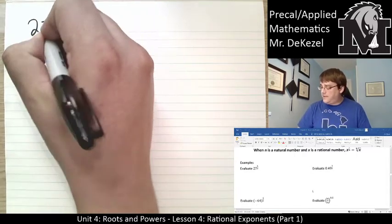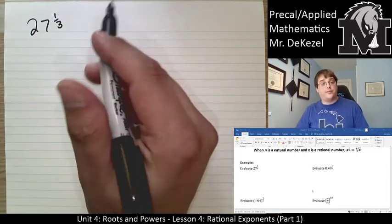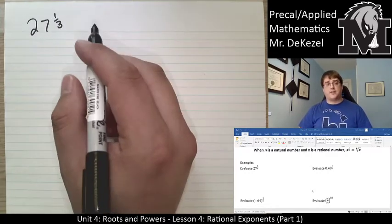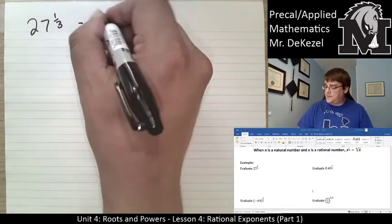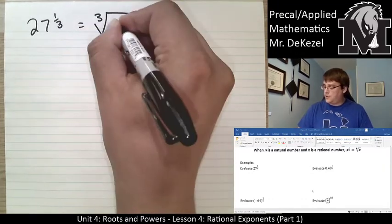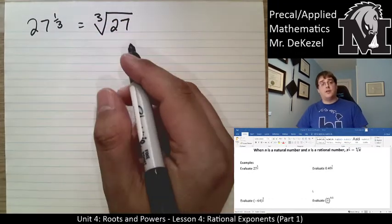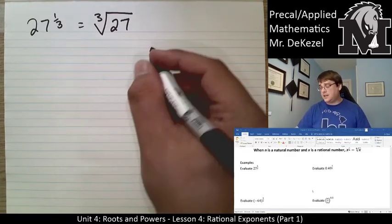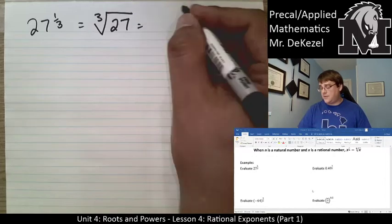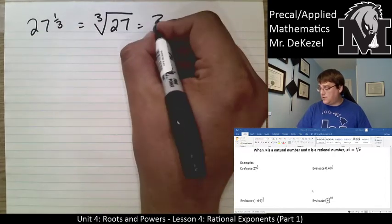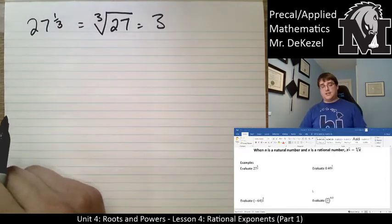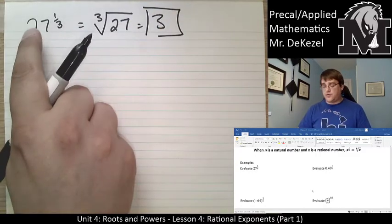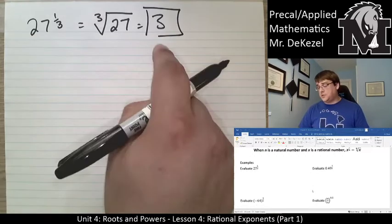Let's do some examples. We've got 27 to the power of one third. Since I have a third, I know that the index of my radical is going to be three. So this is the same as saying the third root of 27. Three times three times three gets us 27, so this is equal to three. 27 to the power of a third is equal to three.